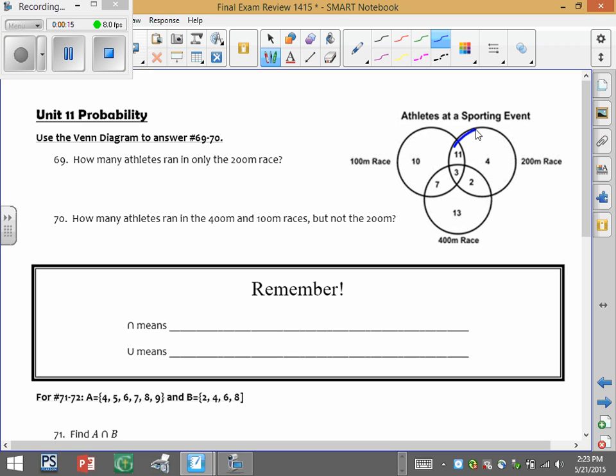Keep in mind there are some athletes that did the 200 and other events. So look at that whole group. That's 4 plus 11 plus 3 plus 2, so that's a total of 20 athletes.